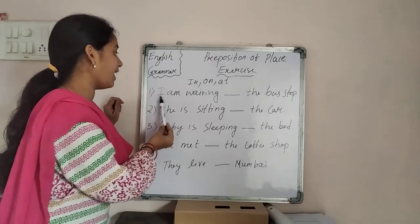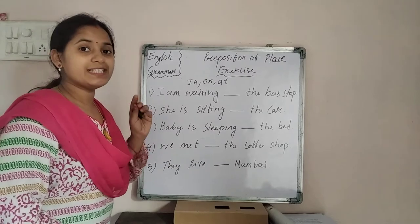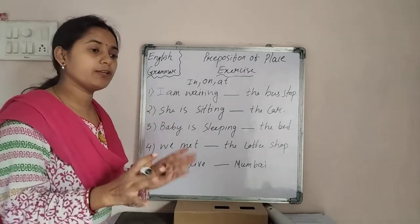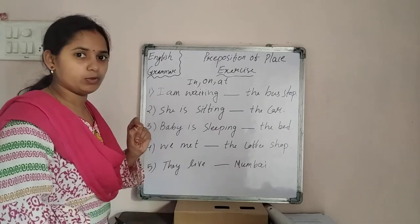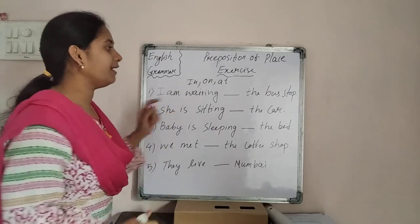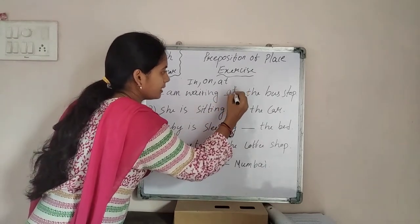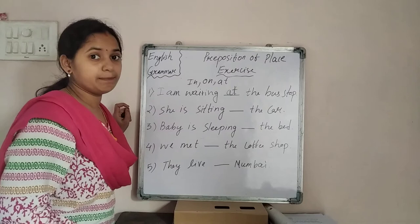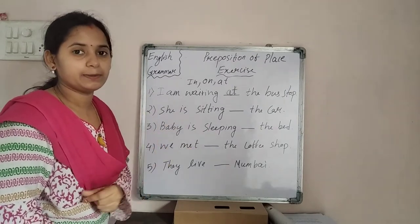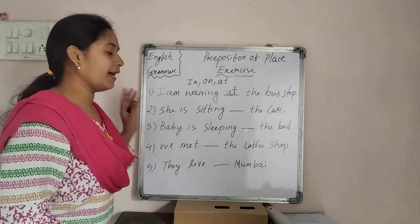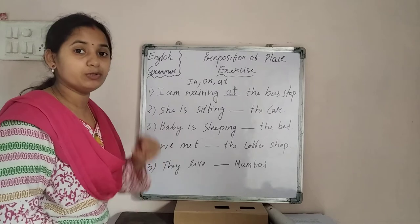The first question: I am waiting dash the bus stop. If you are talking about a particular place, then we have to use at. So the answer is: I am waiting at the bus stop. Similarly, the watchman is standing at the gate.